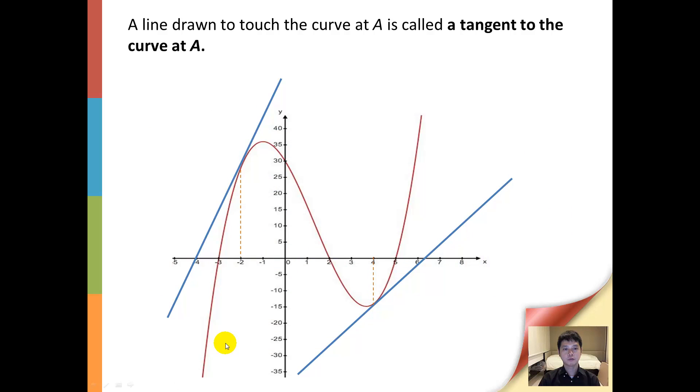Now for any curve there are an infinite number of tangents, and hence at different points of the curve there will be different gradients.